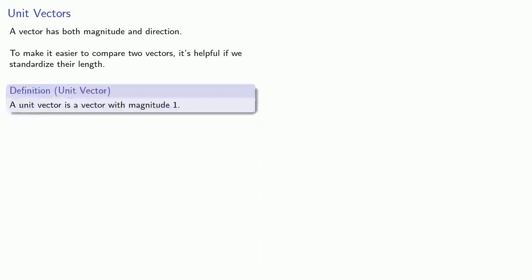Now, remember, a vector has both a magnitude and a direction. And to make it easier to compare two vectors, it's helpful if we standardize their length. And so we introduce the following concept. A unit vector is a vector with a magnitude of 1.